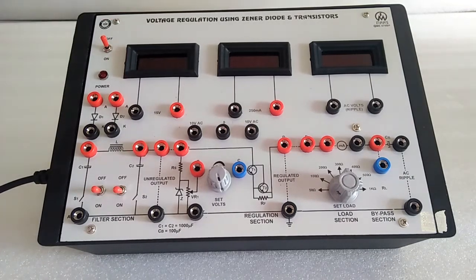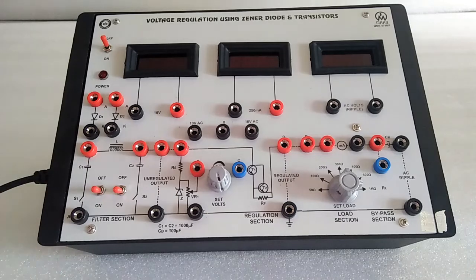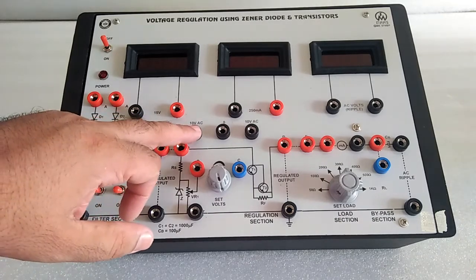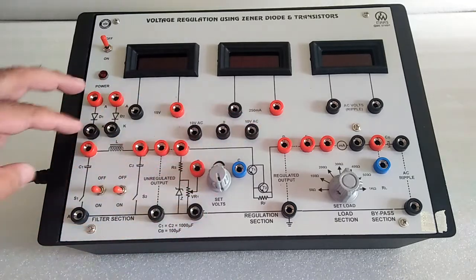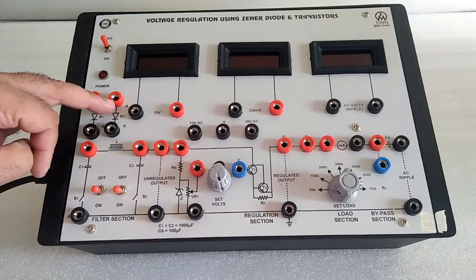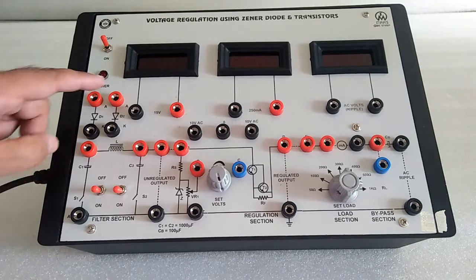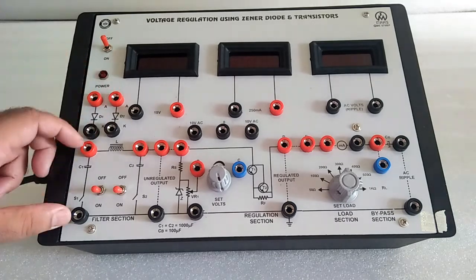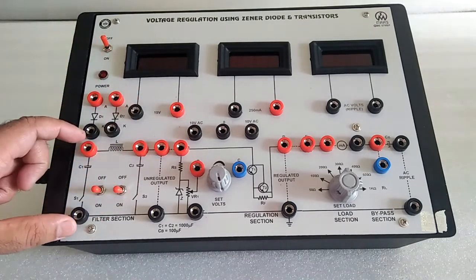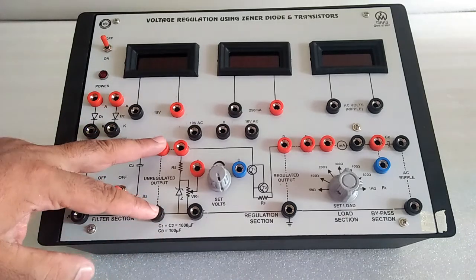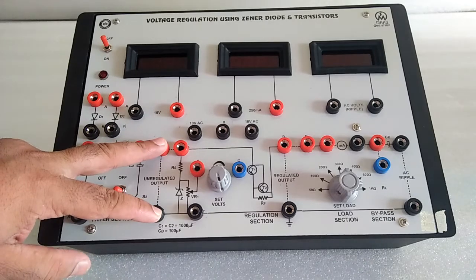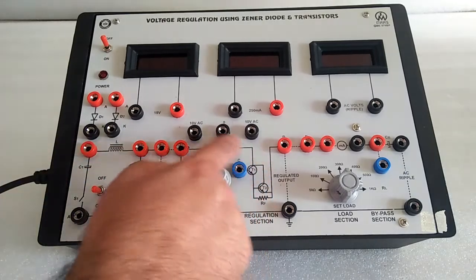This setup demonstrates voltage regulation using Zener diode and transistors. Here we have a 10-0-10 AC transformer, two diodes for making DC, a filter section where we get unregulated output, and a voltage regulation section.